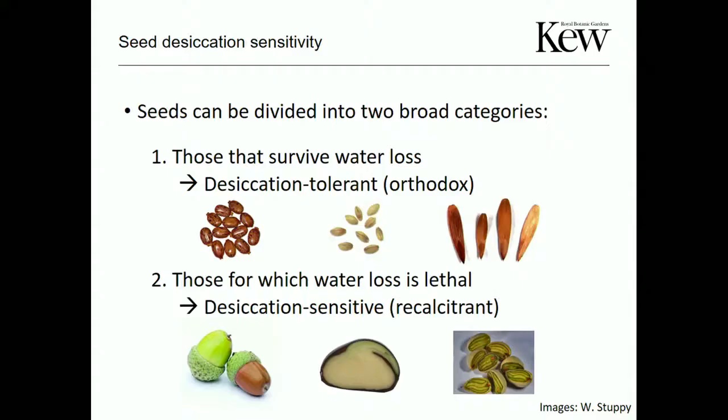Seeds can be broadly divided into two categories: those that can tolerate water loss (desiccation tolerant, or orthodox) and those that can't. Desiccation-tolerant species undergo prematuration drying — shed with quite low water contents — and can undergo further water loss. These are most common in seasonal environments.